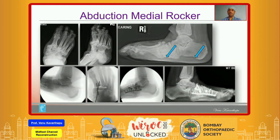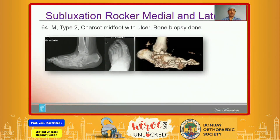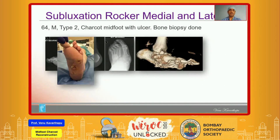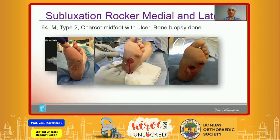Correct the deformity — on this occasion a plantar plate was applied because the fixation did not require extension into the talonavicular joint, and also the main deforming forces are on the plantar side. This patient was treated nine years ago and is still very mobile. A different, more complex example of subluxation type with long-standing plantar bone prominence, managed with debridement and same-stage reconstruction, as bone biopsy specimens done prior to the procedure revealed no infection.